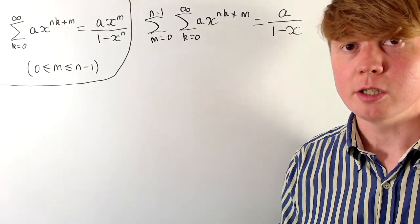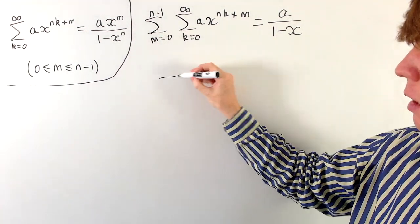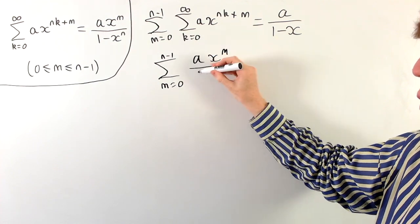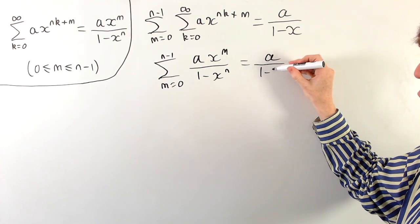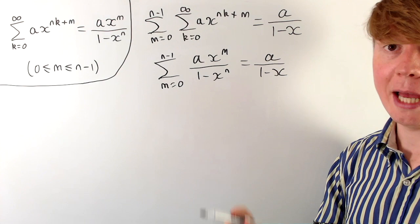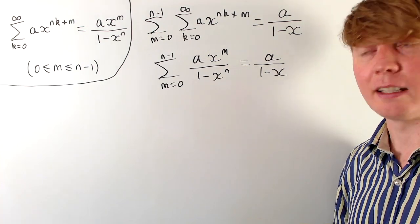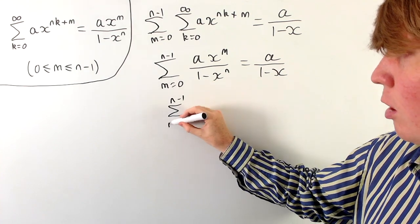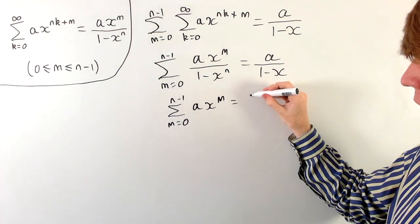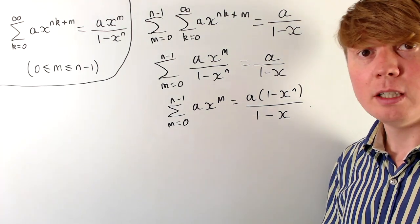We already know the value of the infinite sum inside our double summation: it equals a x to the m over 1 minus x to the n. So we can rewrite the whole thing as the sum from m equals 0 to n minus 1 of a x to the m over 1 minus x to the n, all equal to a over 1 minus x. The term 1 minus x to the n doesn't depend on m, so we can take it outside the sum and multiply both sides by 1 minus x to the n. This recovers the familiar formula: the sum from m equals 0 to n minus 1 of a x to the m equals a times (1 minus x to the n) all over 1 minus x.